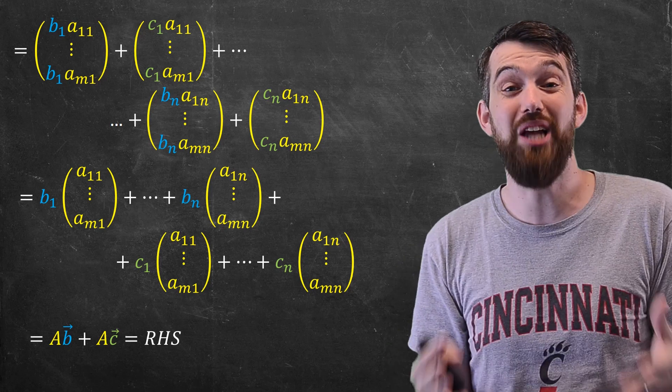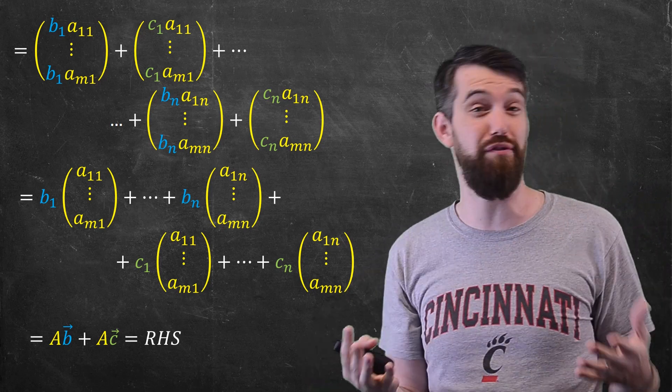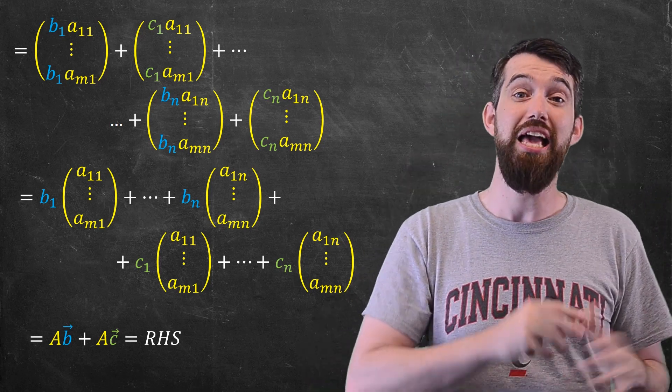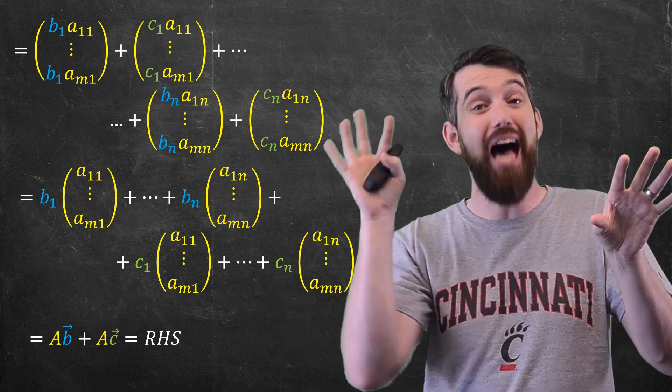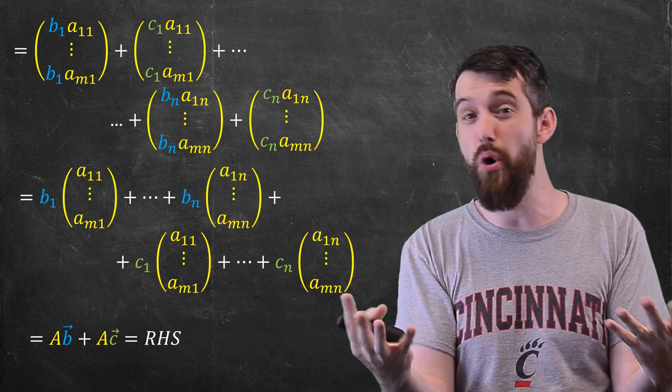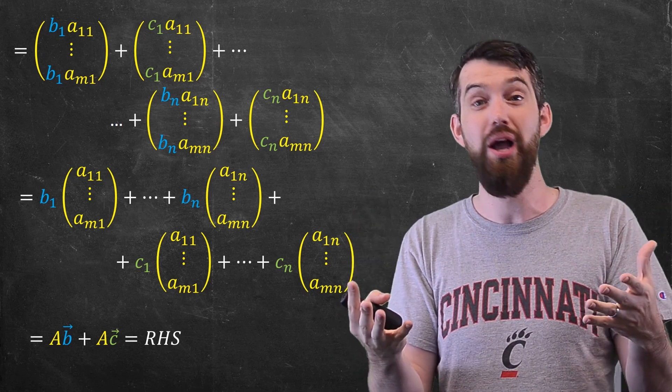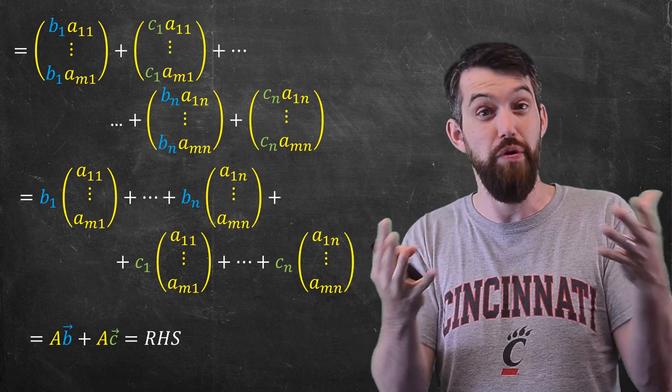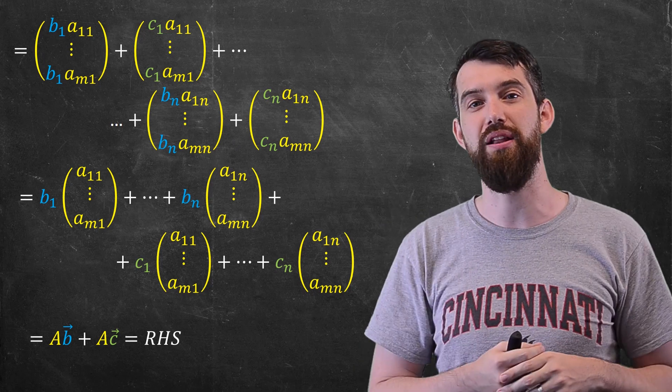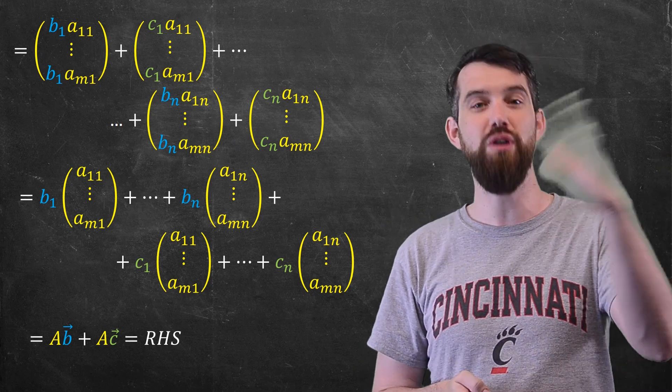So this basic approach can be done for any of the different products we might have seen in linear algebra. In the future we're going to see a matrix times a matrix, it's going to have its own rules, and you're going to apply the same basic techniques to be able to show that you have some algebraic rule and to prove that that algebraic rule is indeed valid.